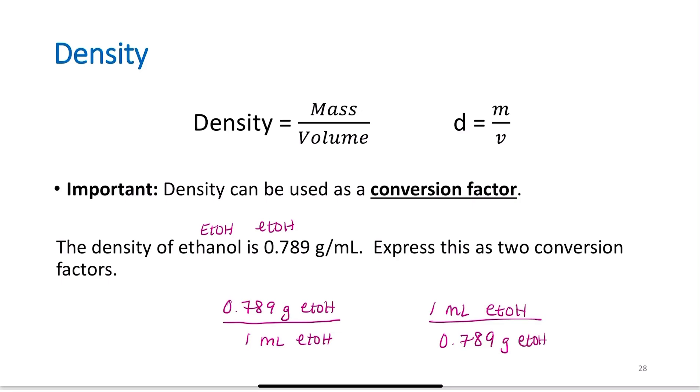I could also write 1 mL of ethanol divided by 0.789 grams. These are both the same thing. If I have 0.789 grams of ethanol, I will have exactly 1 mL of ethanol. Why write it both ways? Well, sometimes I'm trying to cancel out mLs and get to grams. Sometimes I'm trying to cancel out grams and get to mLs. Density is the perfect conversion to go between your mass and your volume.